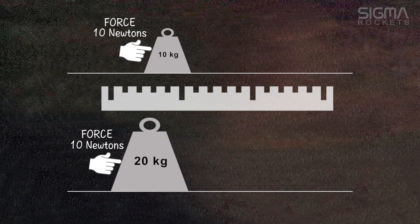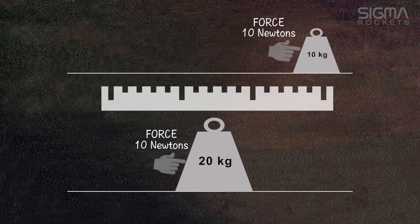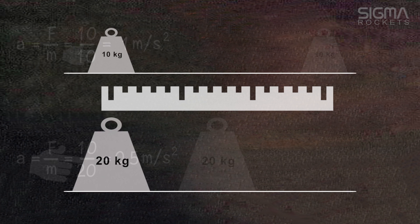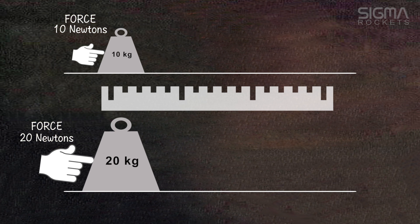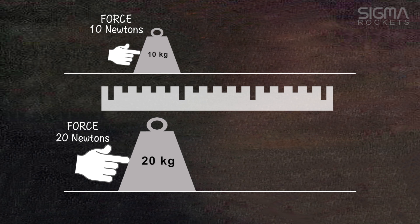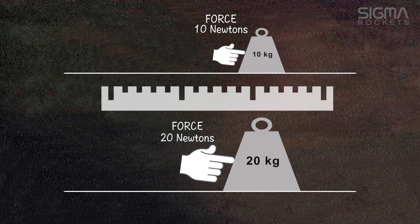If we apply the same force to two different size masses, we can see that the acceleration is twice as high for the 10 kilogram mass than it is for the 20 kilogram mass. We can accelerate both masses at the same rate if we apply twice as much force to the 20 kilogram mass, as shown here.